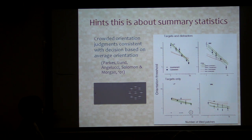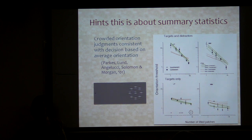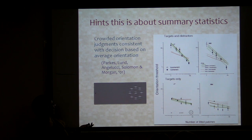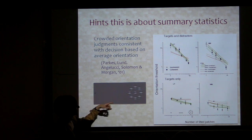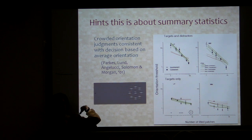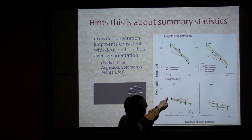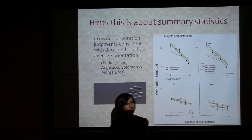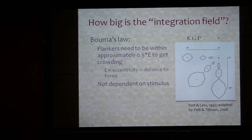A number of people — this is a quote from Dennis Pelli — had been suggesting that what was happening was somehow features were being integrated over too big a region, which to us sounds like something statistical happening. Furthermore, Parks et al. gave people a peripheral test with a bunch of Gabors oriented at different orientations and asked whether the tilt of any tilted ones was up or down. They found that people behaved very much as if they were making the judgment based on the average orientation — a hint that maybe some statistical process is going on.